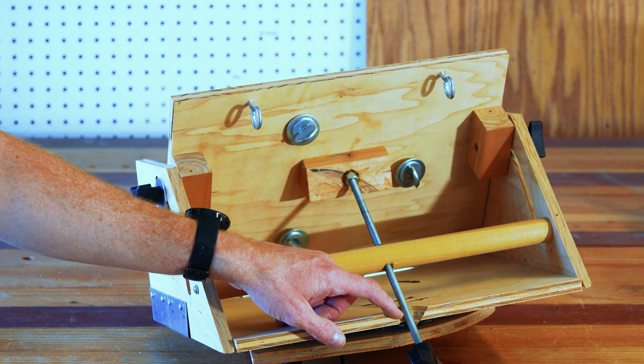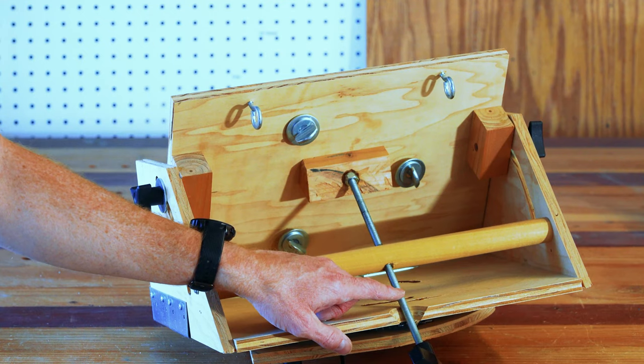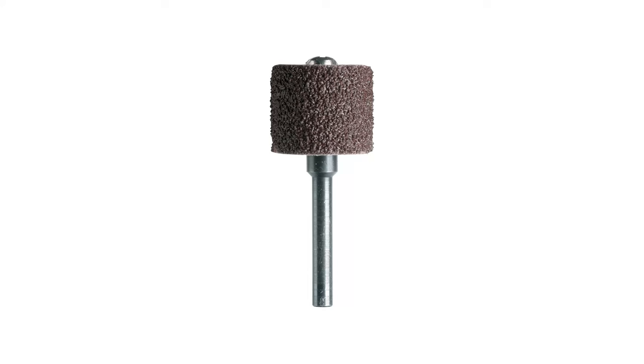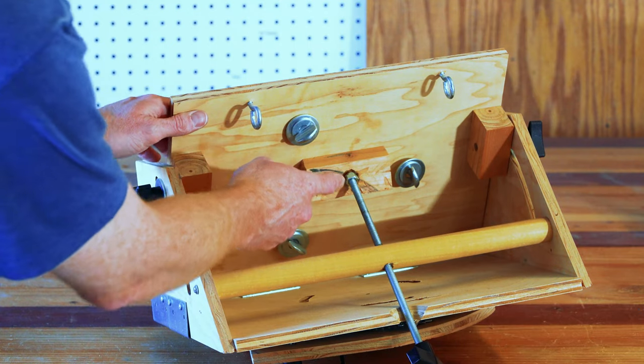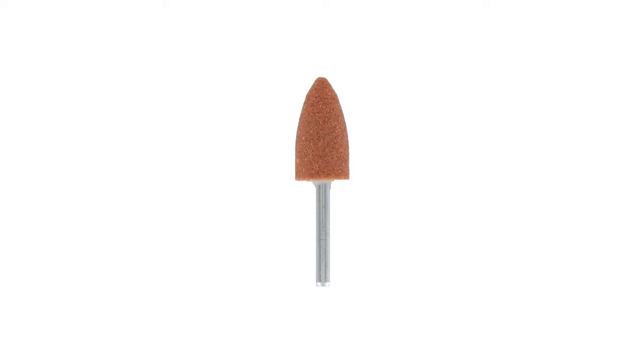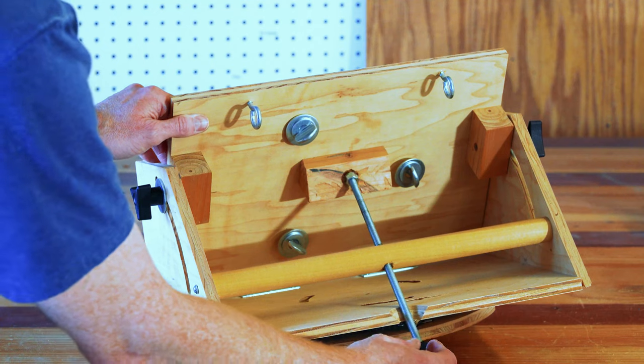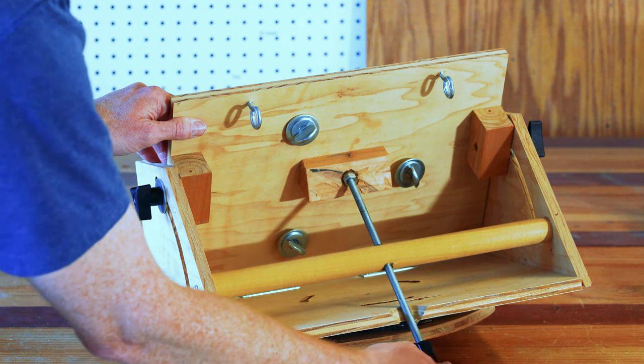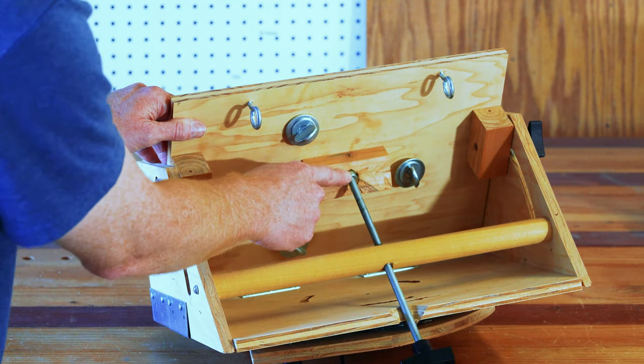A couple other little finishing details. I hogged out this little recessed area for the threaded rod with a Dremel bit, and did sort of the same thing here. I had a little cone shape, and it worked well for hogging out that little recess. There's nothing magical about that. It's just a little place that fits that nut.